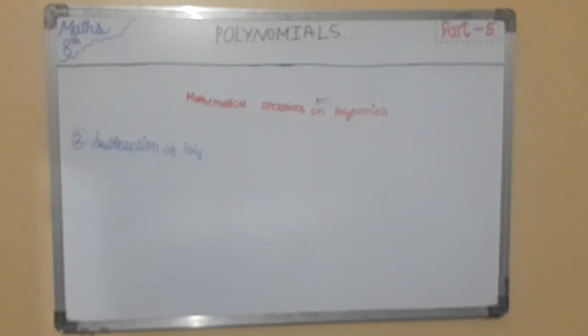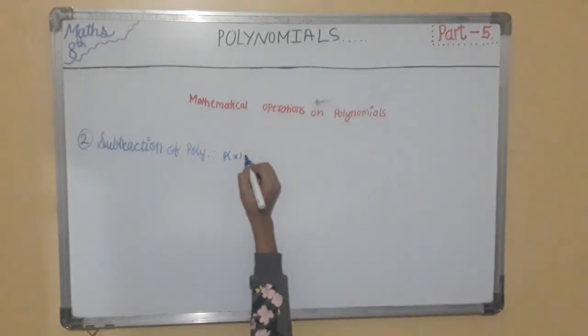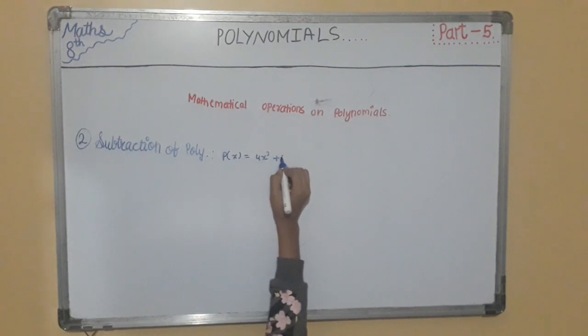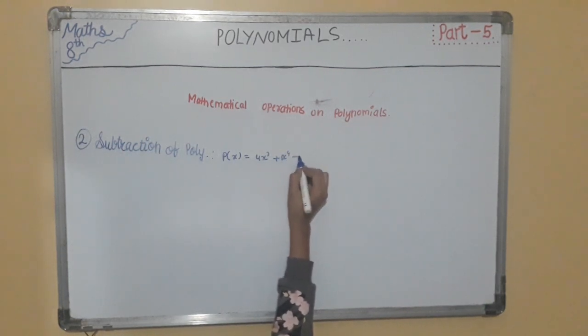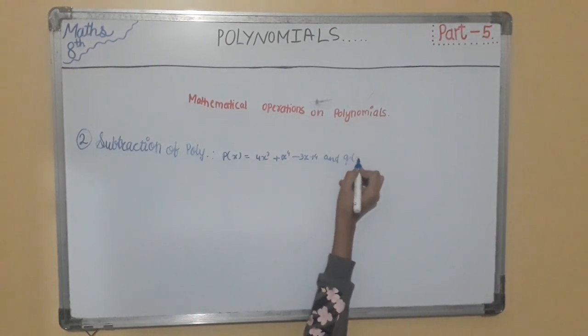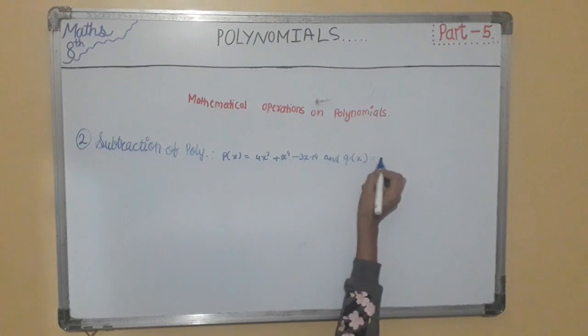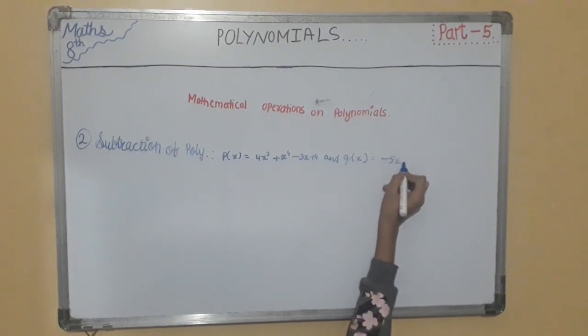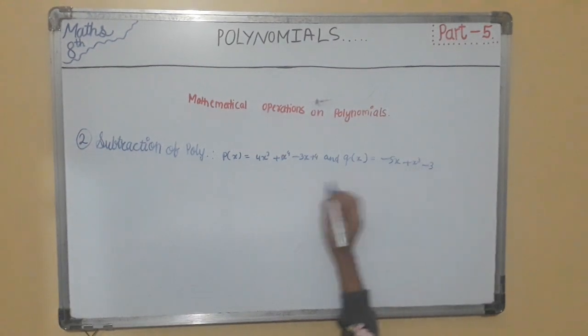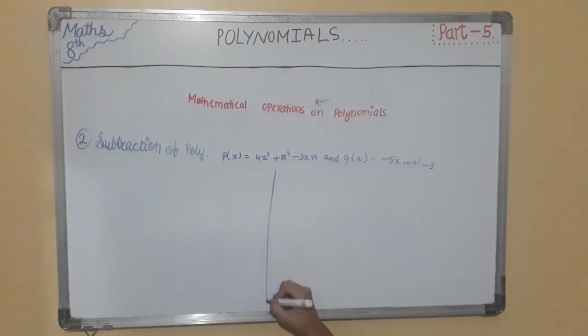Let us consider two polynomials: P(x) = 4x³ + x⁴ - 3x + 4 and Q(x) = -5x + x³ - 3. As discussed in addition of polynomials, here also there are two methods.